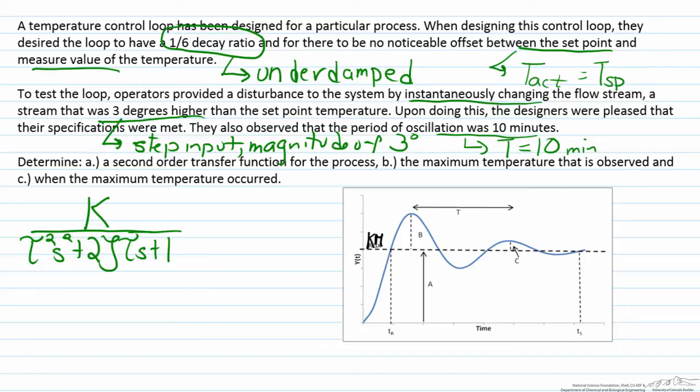So what we have here is that the system began at a particular temperature, so we'll call that TSS, the steady state temperature, and then there was a step increase of three degrees, therefore our m here is three because that's the magnitude of the step input.